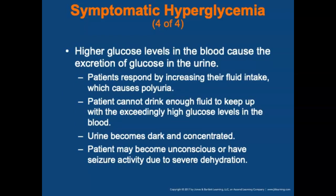Higher sugar levels in the blood cause glucose excretion in the urine. Patients respond by increasing fluid intake, which causes polyuria. In HHNS, the patient cannot drink enough fluid to keep up with the exceedingly high glucose levels, so urine becomes dark and concentrated. The patient may become unconscious or have seizure activity due to severe dehydration.